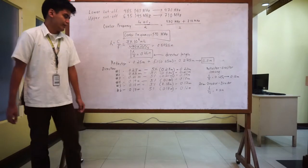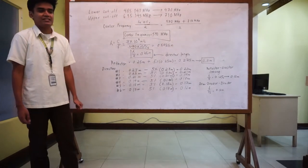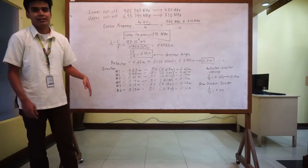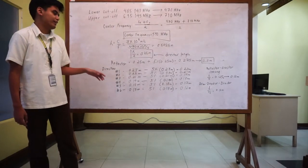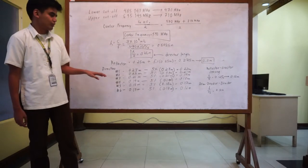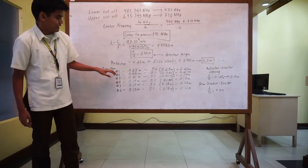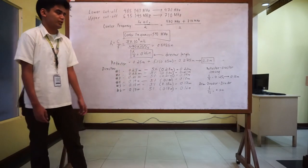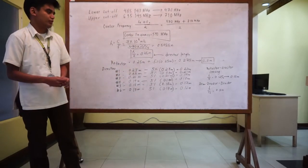In our design, we arrived at a total of 6 directors. So each director is 5% smaller than the one before it. So starting from director 1, we have the half wavelength 0.25 minus 5% of 0.25 is equal to 0.23 meters.